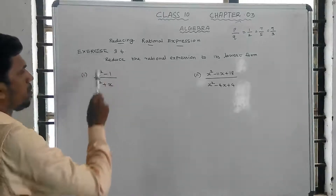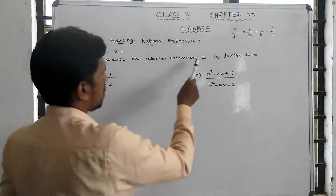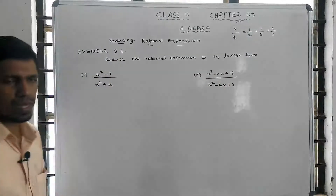It says 3.4: reduce the rational expression to its lowest form.